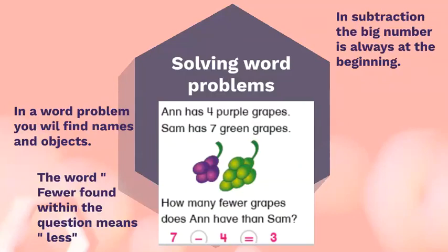So Ann has four purple grapes, Sam has seven green grapes. Ann and Sam are both people and they both have grapes, but the difference is they're different colors and different amounts. Now how do we know it's a subtraction? Because in the question they're asking how many fewer grapes does Ann have than Sam. The word fewer means less, and when it's less you are taking away, so it is subtraction.